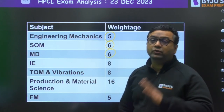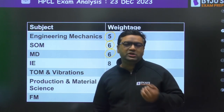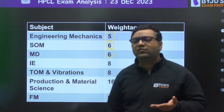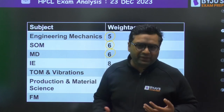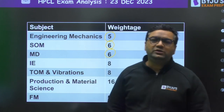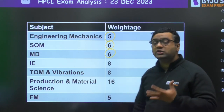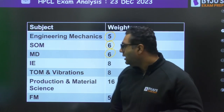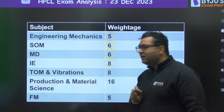In Machine Design, they asked one question from Theory of Failures — specifically the Maximum Shear Stress Theory — one question from the ascent diagram, one from riveted joints, and one question related to belt drives.